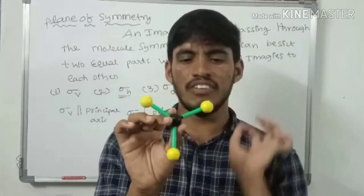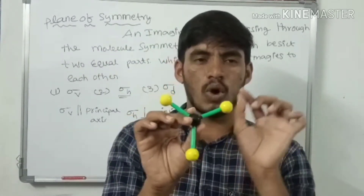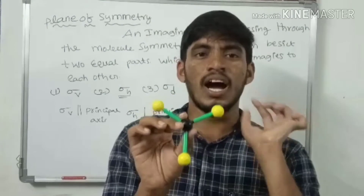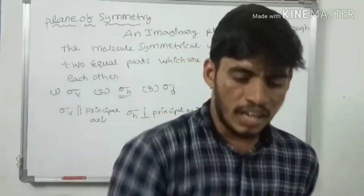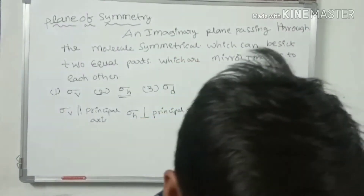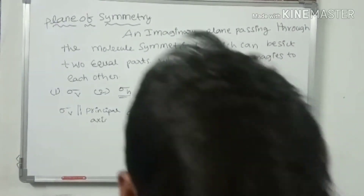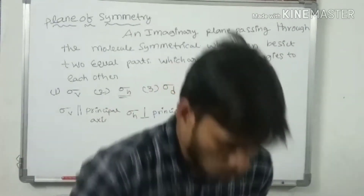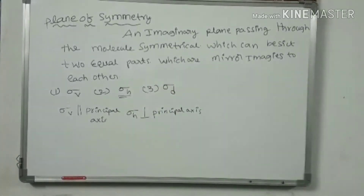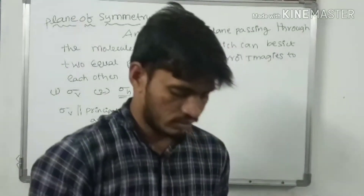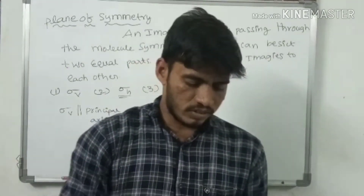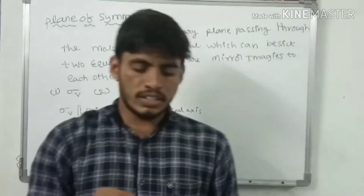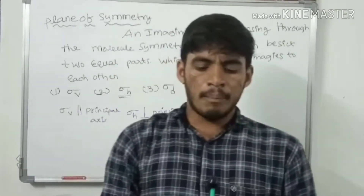The horizontal plane of symmetry is perpendicular to the principal axis. For BF₃, all four atoms lie in this plane, making them mirror images of one another. Therefore BF₃ has three sigma v and one sigma h.